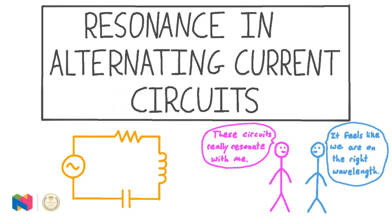In this video, we are going to learn about the phenomenon of resonance in alternating current circuits. Resonance occurs because both the capacitive and inductive reactances depend on the frequency of the alternating voltage and current.